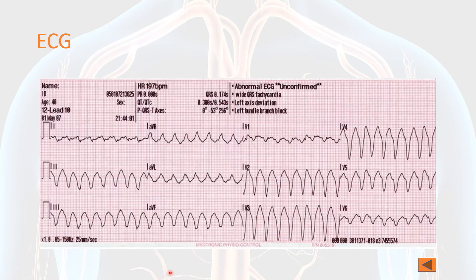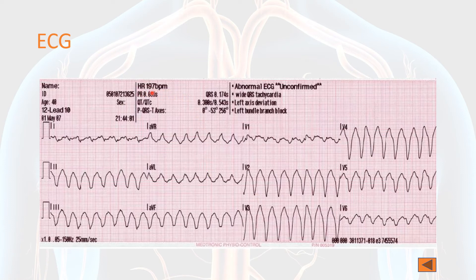Let's look at the ECG of ventricular tachycardia again. Assuming you have some basic knowledge of ECG interpretation: to meet the definition of VT, there should be broad QRS complexes — here they appear to be six or seven small squares wide. The heart rate should be more than 100 beats per minute with regular rhythm. Most ECGs come with the heart rate printed by machine, but if you want to calculate it, divide 300 by the number of big squares. In this ECG, there are about 1.5 big squares between two QRS complexes, which equates to 200 beats per minute — very close to the 197 beats per minute calculated by the machine.